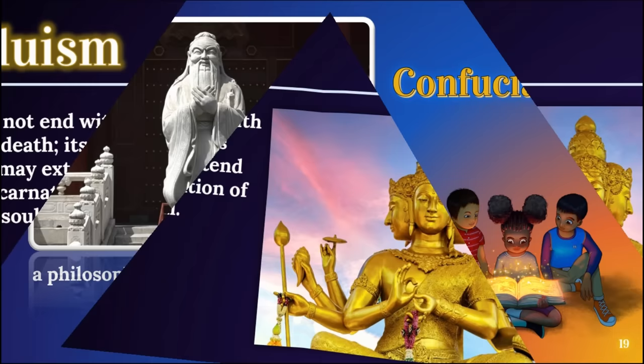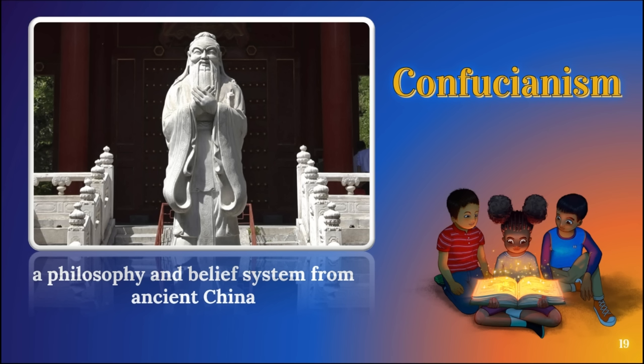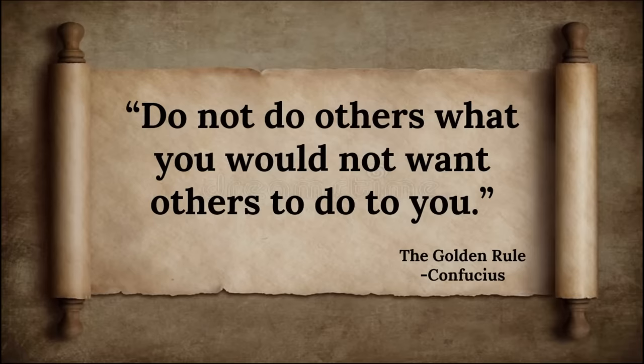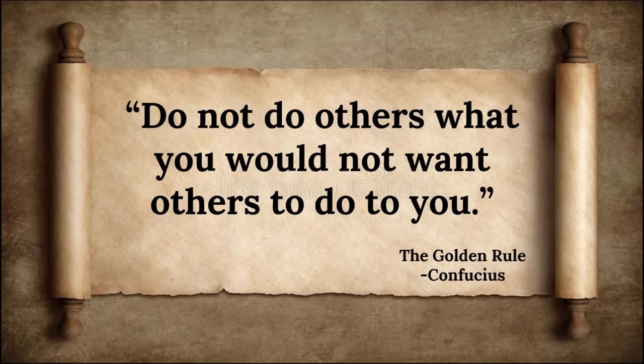Next is Confucianism — a philosophy and belief system from ancient China, regarded more as a social and ethical philosophy rather than a religion. It originated in China, and its founder is Confucius. The core Confucian thought is the golden rule or the principle of reciprocity: 'Do not do to others what you would not want others to do to you.' Simply put: if you don't want something done to you, don't do it to others.